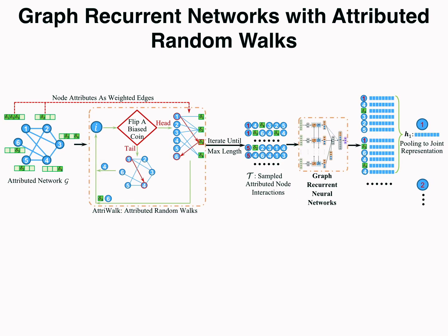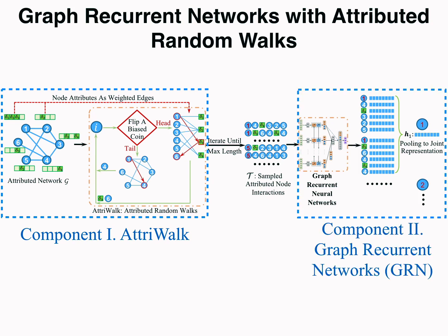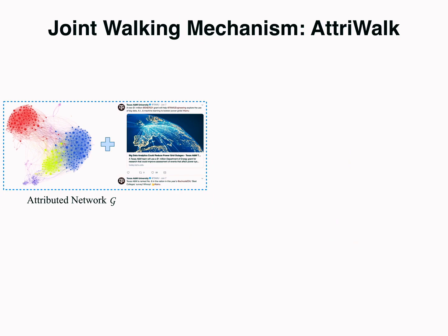We propose a novel framework named GraphRNA. It consists of two major components. First, a collaborative working mechanism named Atriwalk. Second, a tailored deep embedding architecture for random walks named Graph Recurrent Networks.